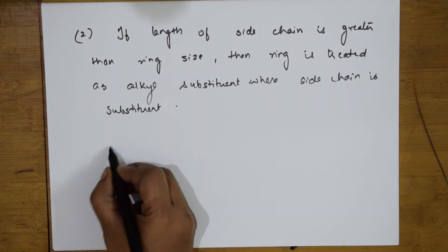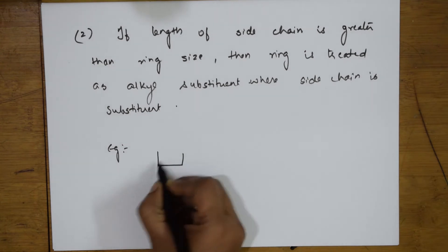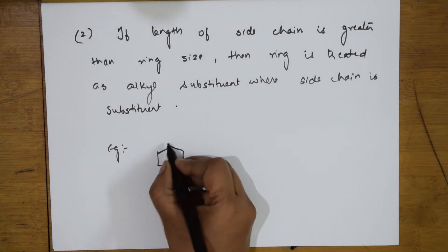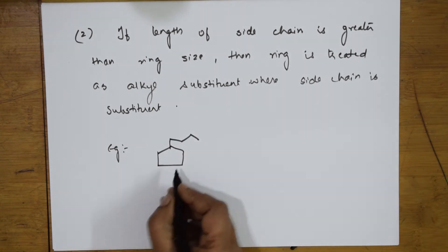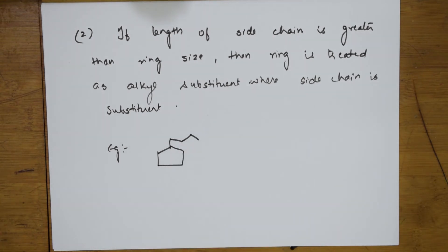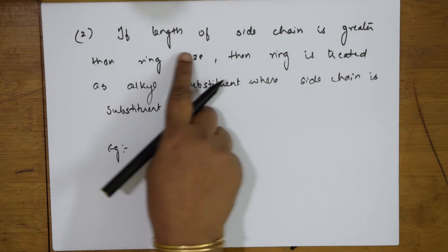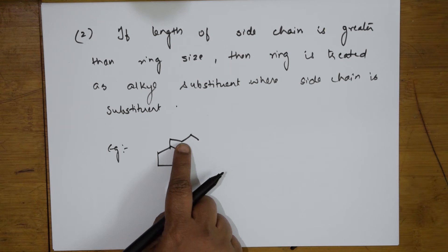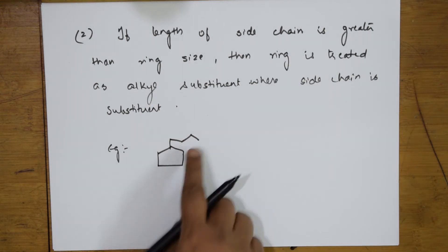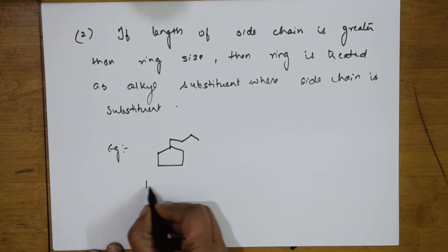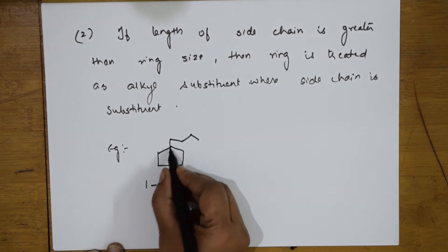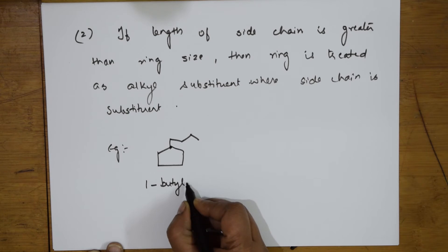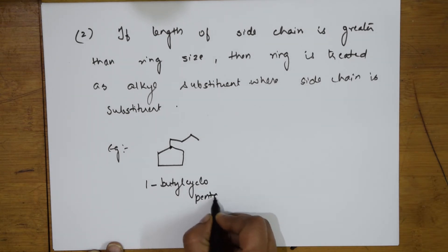Suppose I have a compound: 1, 2, 3, 4, 5 — it is pentane. Now suppose you have a substituent — 1, 2, 3, 4 carbons — that is butyl. Here the length of the side chain is smaller than the ring, so the chain is not longer. I can comfortably start from here: 1, 2, 3, 4 — this is the first position, named as 1-cyclobutyl-pentane.